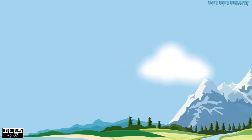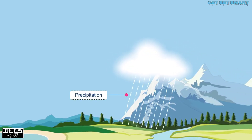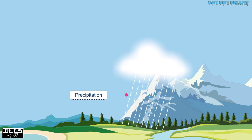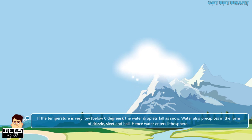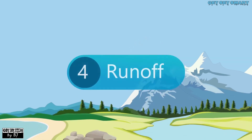When the clouds cannot hold any more water, it precipitates. At higher altitudes the temperature is low, so the water droplets lose their heat energy and fall down as rain. If the temperature is very low — below zero degrees — the water droplets fall as snow. Water also precipitates in the form of drizzle, sleet, and hail. In this way, water enters into the lithosphere, that is, onto land.